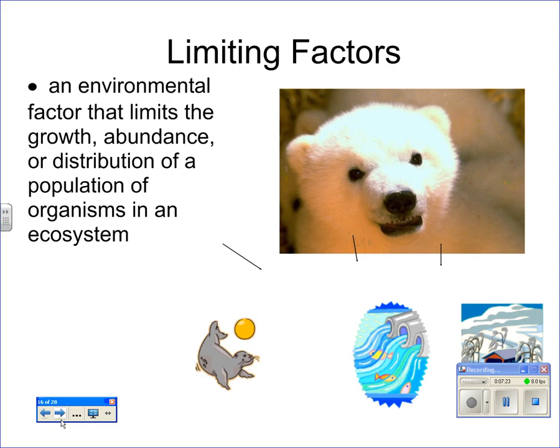Limiting factors are factors that cause a species to be limited by something they need to survive — for example, water, food, and shelter. For humans, temperature and food are common limiting factors, as are toxins in the environment. When a species reaches the limit of the factors that control it, the population will either stabilize or die out.